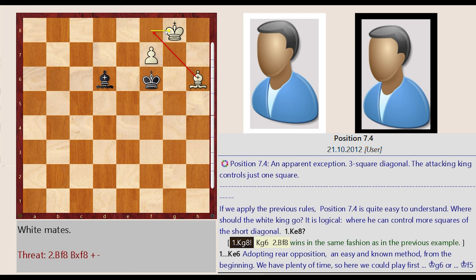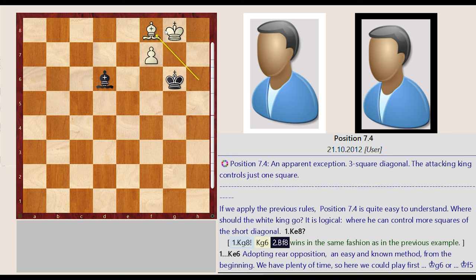Where he can control more squares of the short diagonal. King F8 G8. King F6 G6. Bishop H6 F8. Wins in the same fashion as in the previous example.